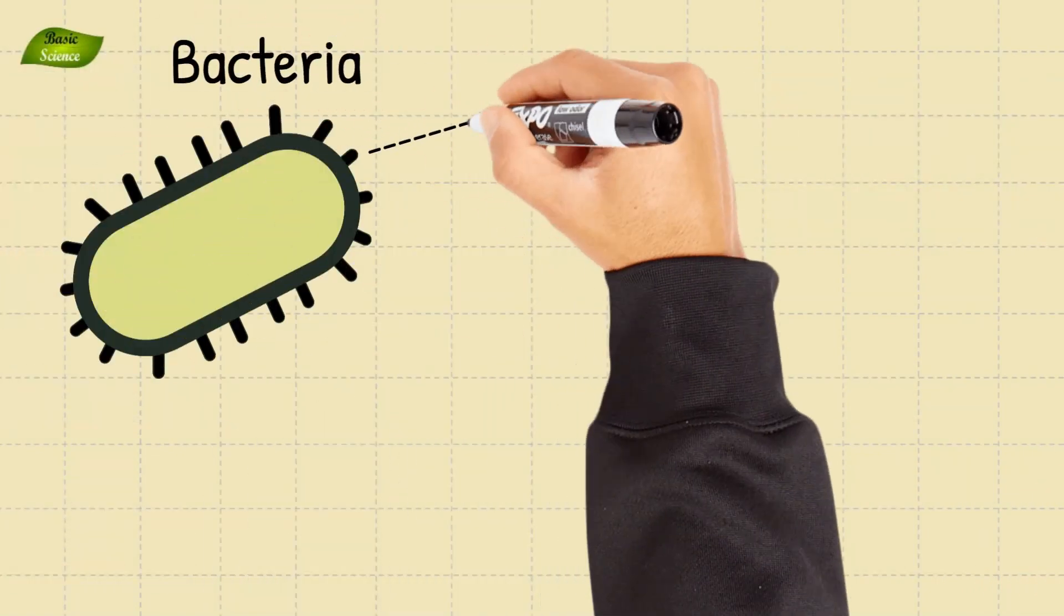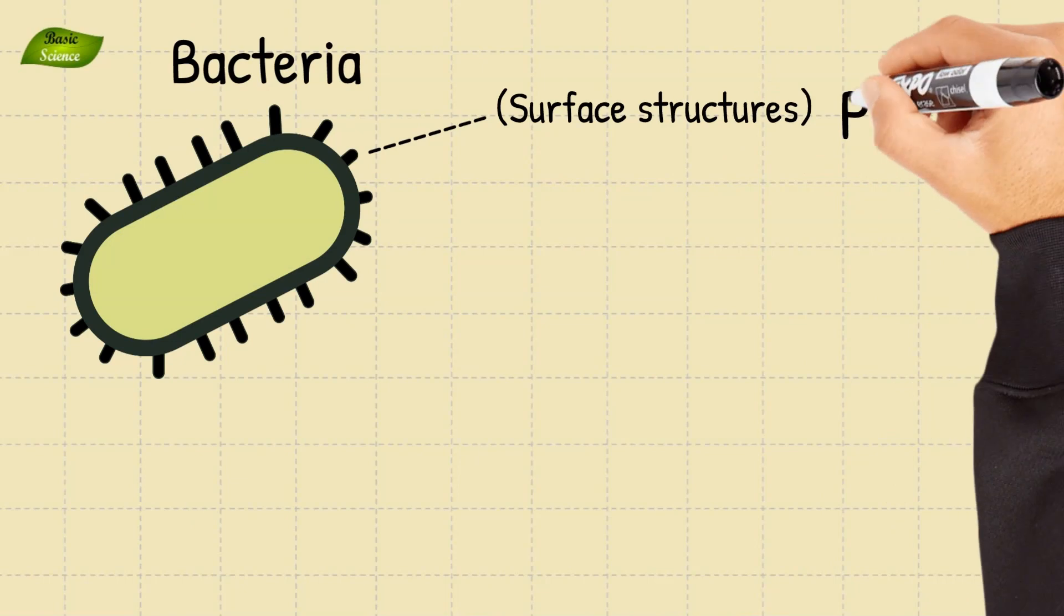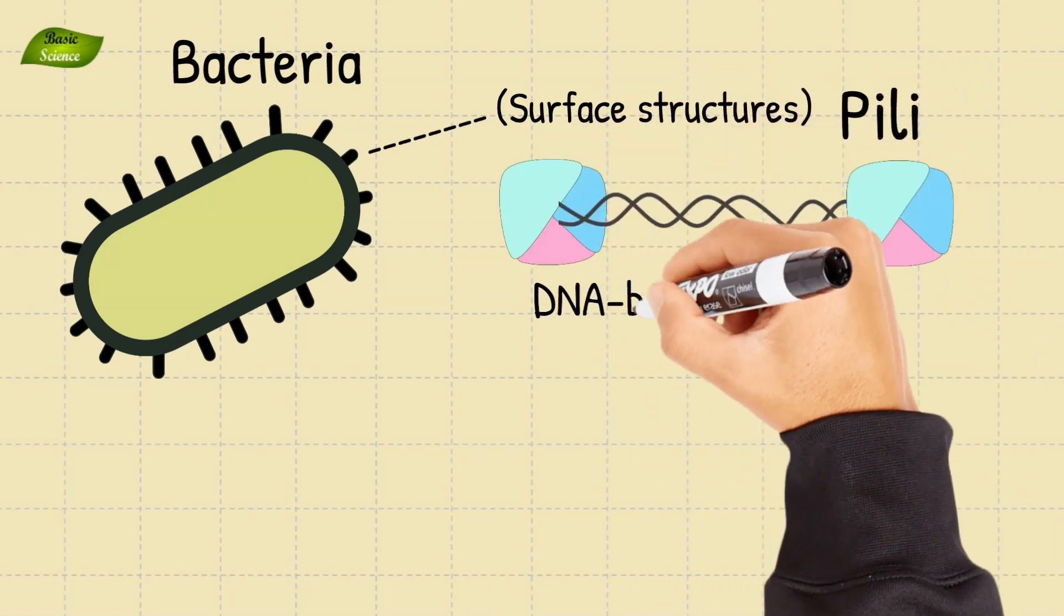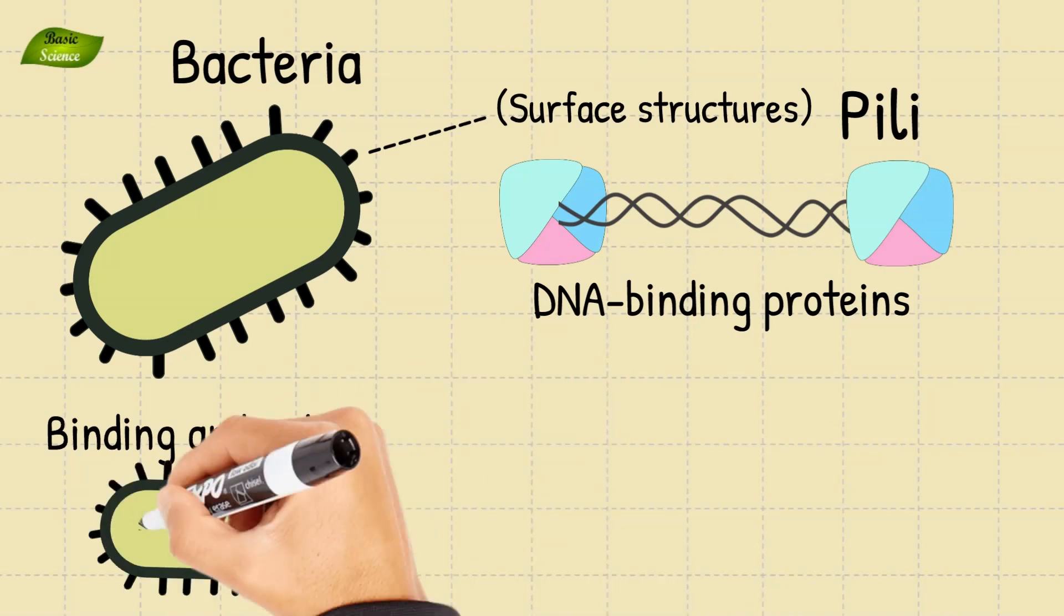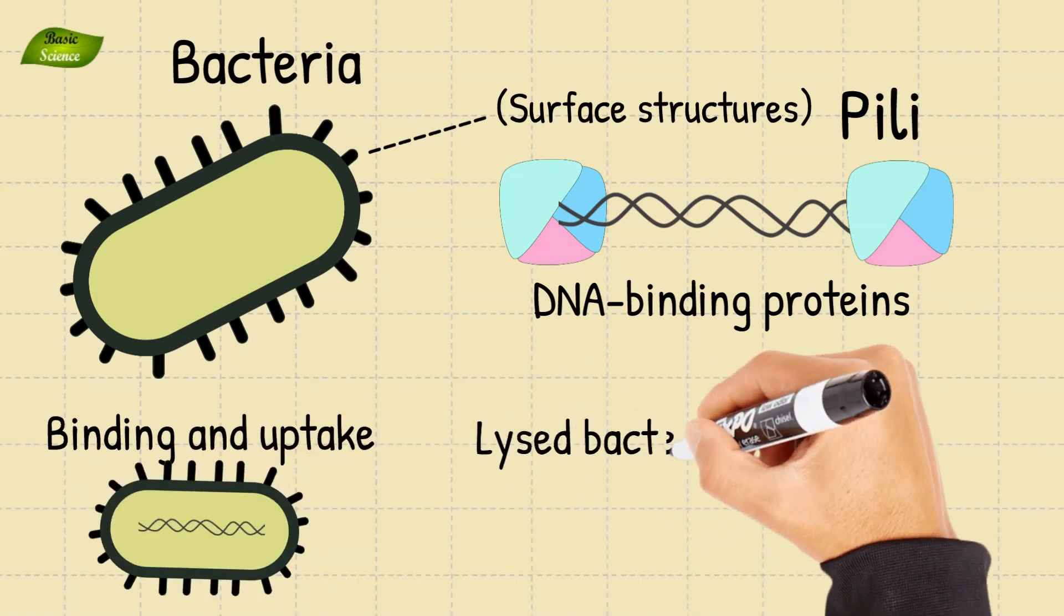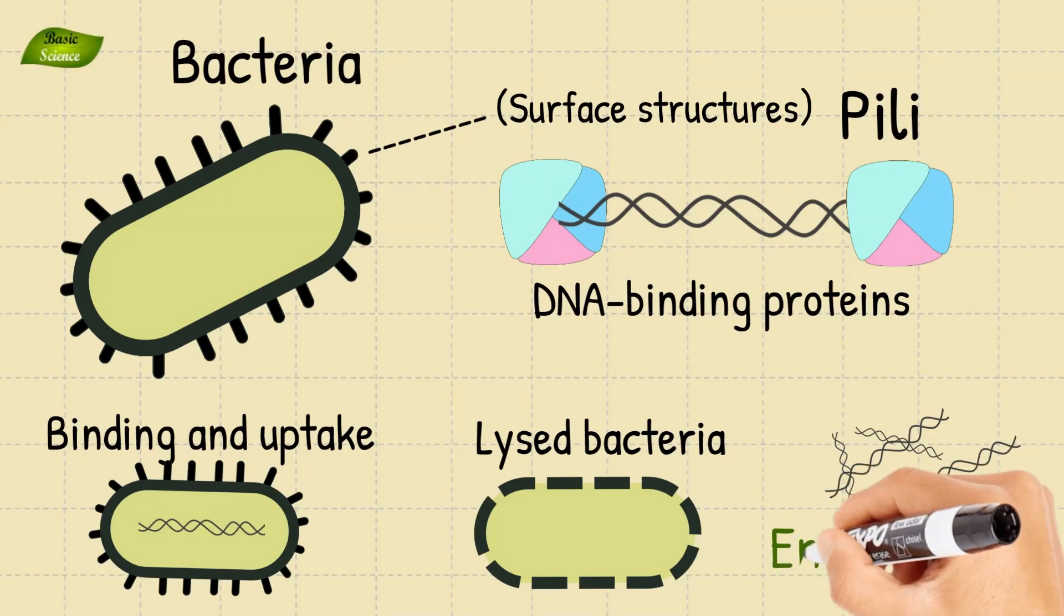Competent bacteria express special surface structures like pili or other DNA binding proteins that facilitate the binding and uptake of extracellular DNA fragments. This extracellular DNA can be released by lysed bacteria or come from the environment.